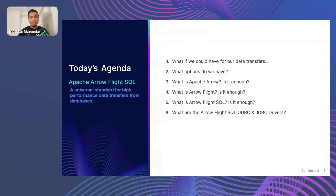We'll start with some future options — what if we could have these for our data transfer, and what options do we have to meet those requirements. We'll do a quick intro about Apache Arrow and talk about why Arrow isn't just enough. Then we'll introduce Arrow Flight and understand how Arrow Flight itself isn't just enough. And finally we'll come to our topic, Arrow Flight SQL, and talk about what Flight SQL brings to the table and various other scenarios.